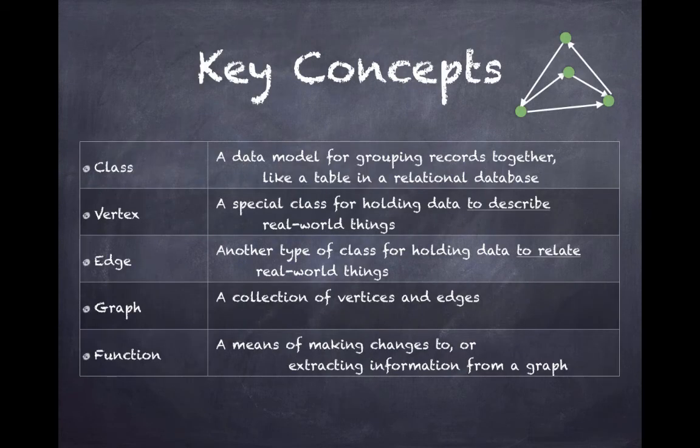Key concepts of a graph are class, vertex, edge, the graph itself, and functions on the graph. A class is a model for grouping records together, like a table in a relational database.